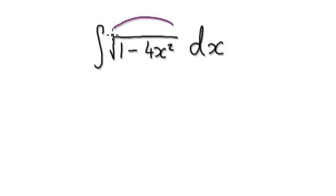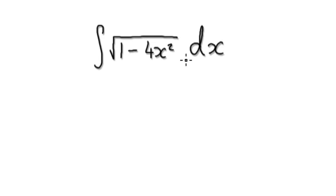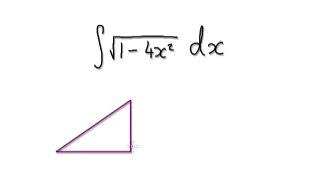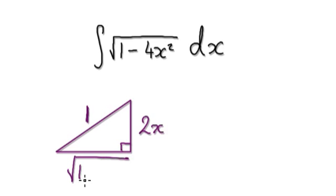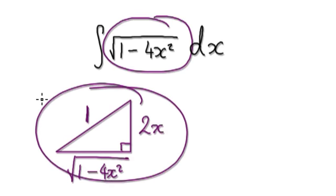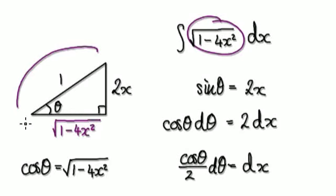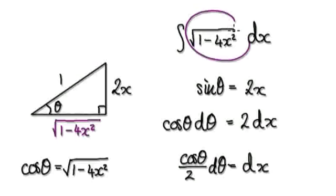To do this, we somehow need to replace this complicated expression. Create your right angle triangle in such a way that this substitution works. If you make the hypotenuse to be 1 and make the opposite side to be 2x, then the adjacent will have no choice but to be √(1-4x²).